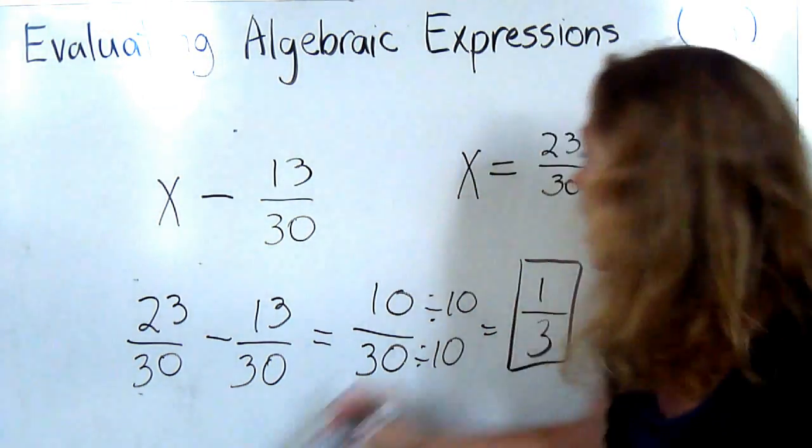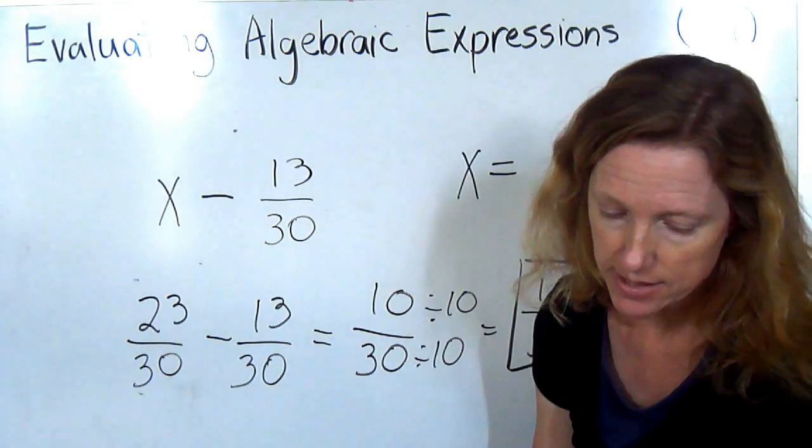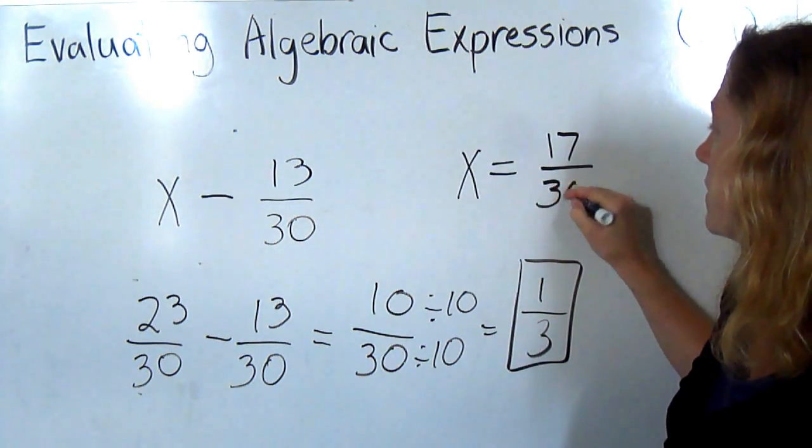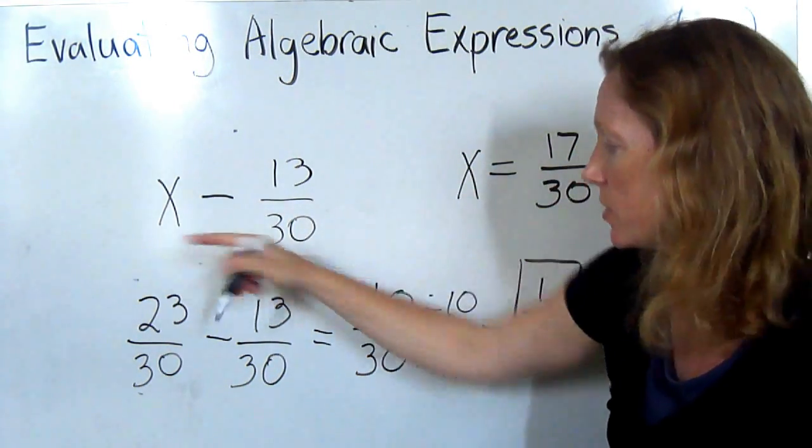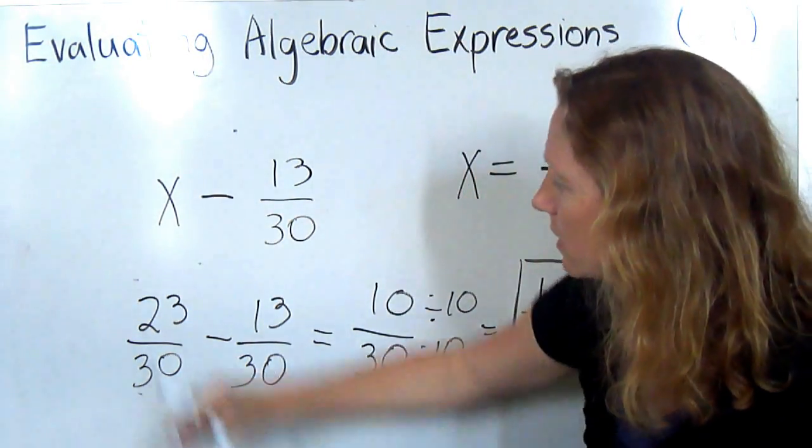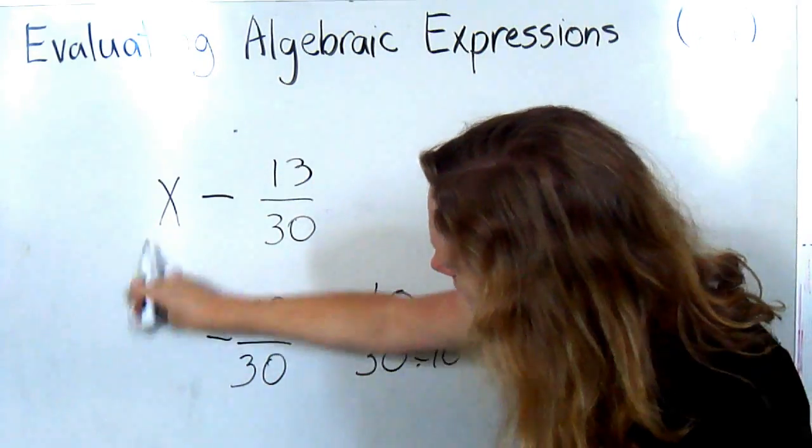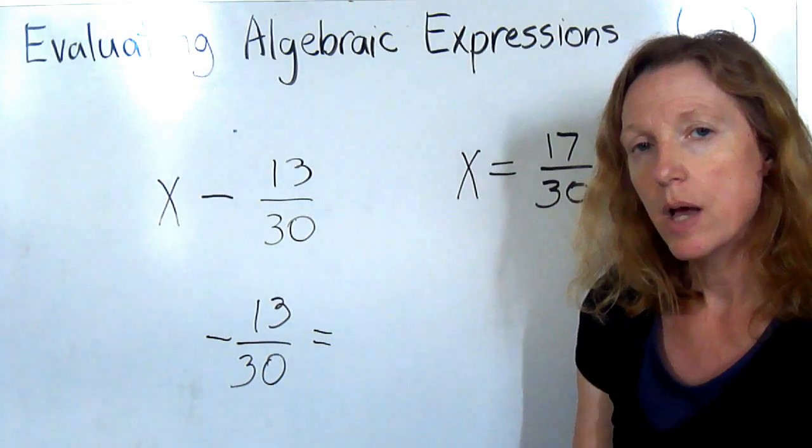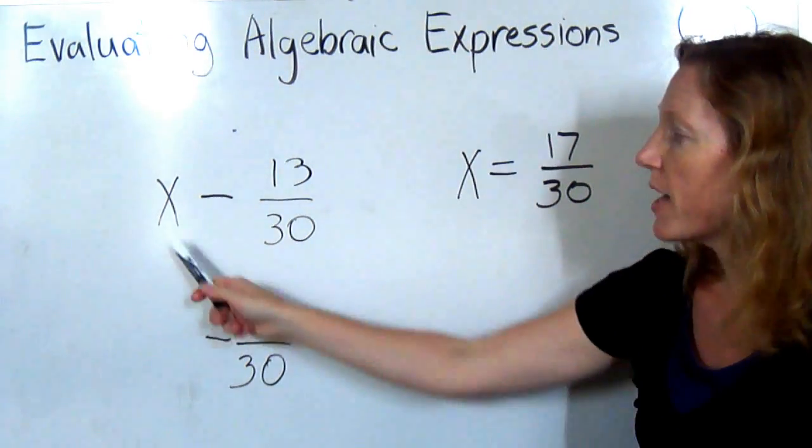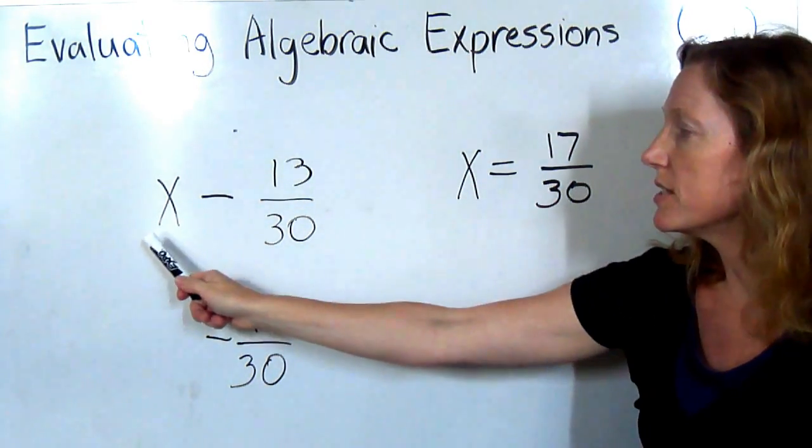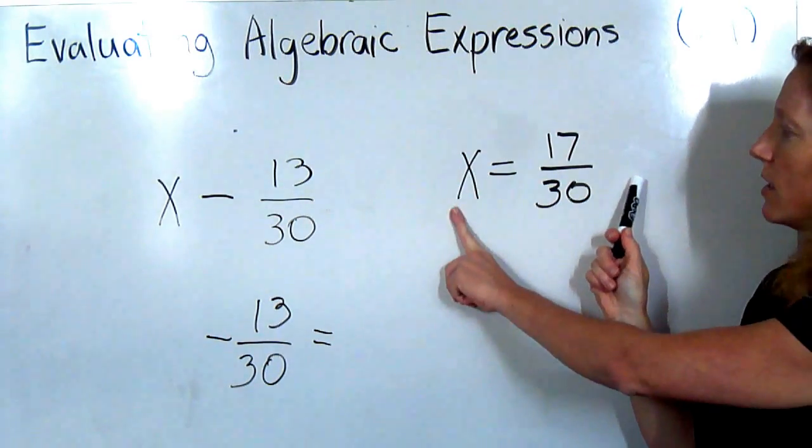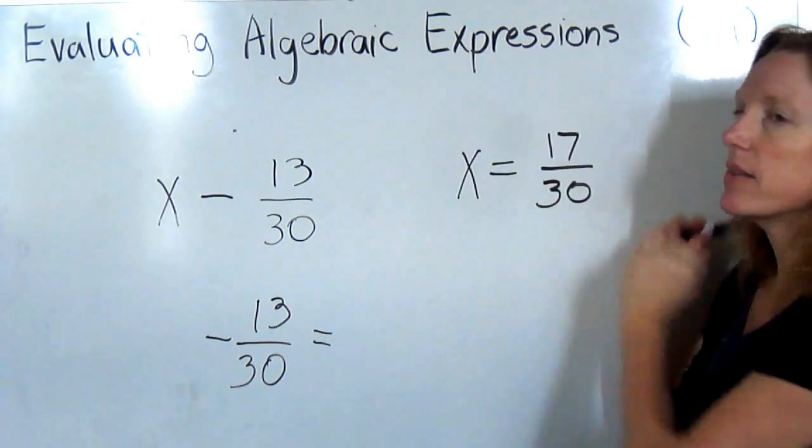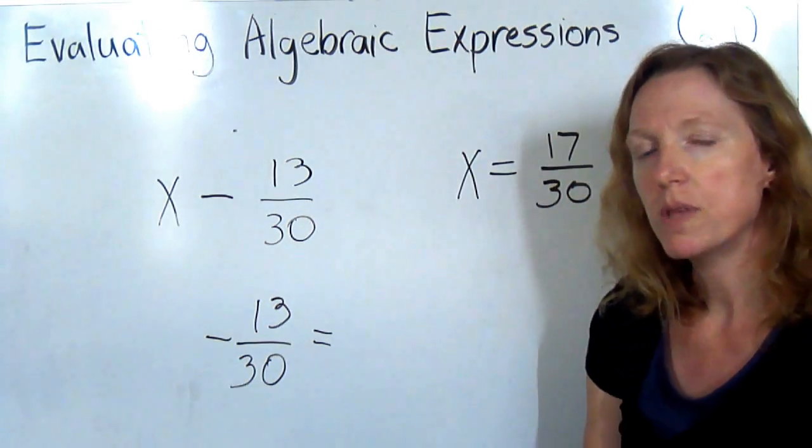Now I'd like you to try one. We're going to change x to 17 over 30. So now I have a different number I'm going to substitute in for the x. Okay, I'm going to give you a minute to try that. Think about evaluating this algebraic expression. You're going to be subtracting two fractions because x is 17 over 30. So think about where you're going to cut this out and where you're going to paste it, and then perform the operation.